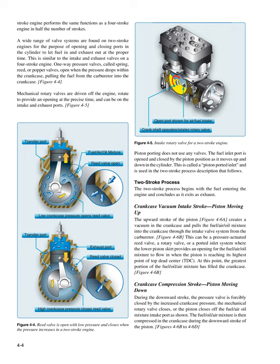Crankcase compression stroke: during the downward stroke, the pressure valve is forcibly closed by the increased crankcase pressure, the mechanical rotary valve closes, or the piston closes off the fuel/air/oil mixture intake port. The fuel/oil/air mixture is then compressed in the crankcase during the downward stroke of the piston.